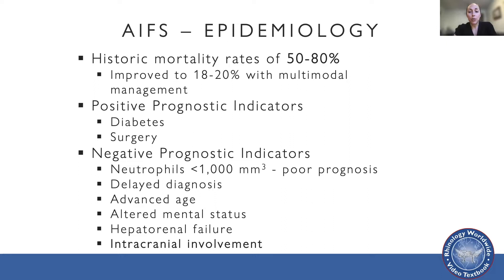The acidotic glucose-rich environment is ideal for fungal growth. Patients in diabetic ketoacidosis are additionally adversely affected as phagocytosis is diminished in these patients. Diabetic patients also face an overall lower mortality rate compared to immunocompromised patients, likely attributable to the more readily reversible disease state. The remaining majority of patients are largely immunosuppressed with conditions including hematologic malignancy, neutropenia secondary to chemotherapy, AIDS, HIV, and transplant patients. Neutropenia is the most common predisposing factor to AIFS. A small subset of patients may be in iron overload or undergoing iron chelation therapy; specifically, the species Rhizopus may bind to extracellular iron in patients being treated with iron therapy.